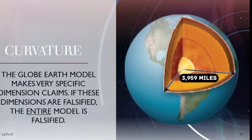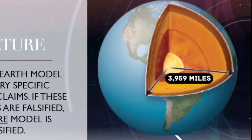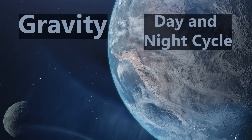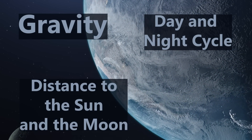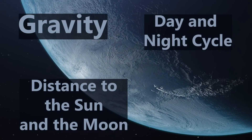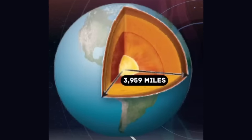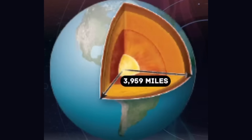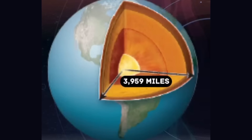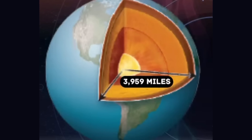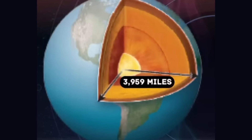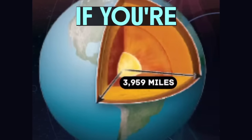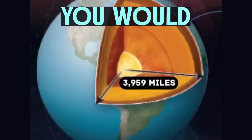Everything in the globe model uses this radius value — gravity, day and night cycles, the distance to the sun and moon. To calculate a radius of orbit, you need the distance from the center to the surface of the earth and from the surface up to where objects are in orbit. If this value is not true, the entire model is immediately falsified — even distances between places on earth. Everything boils down to this number, so if you're actually seeking the truth you would immediately go and examine it.